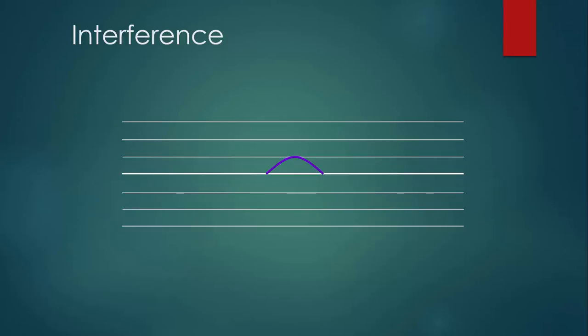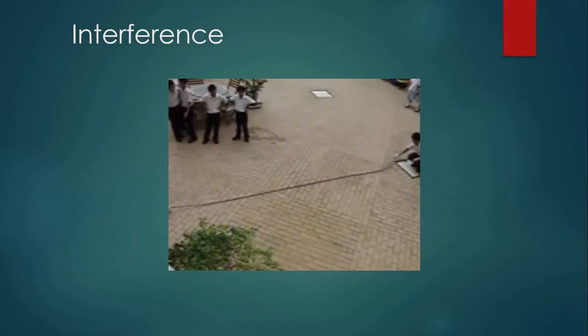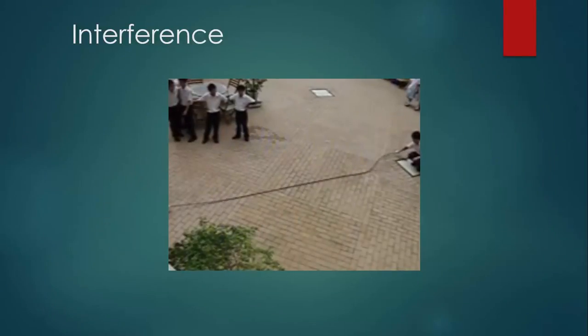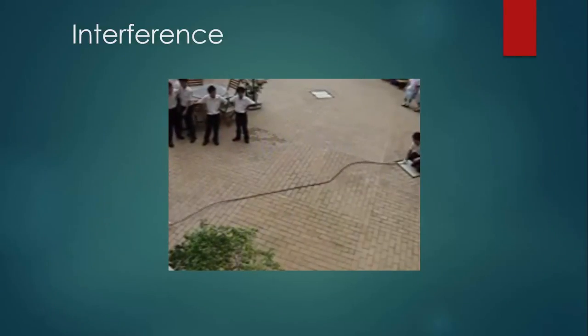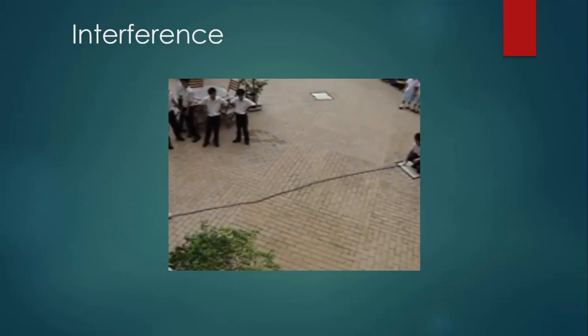When they're done interfering, they continue moving in the direction they were originally moving, with the displacements they originally had, as if nothing ever happened. Let's take a look at a couple of real-life examples. The trough on the left and the crest on the right have just about the same displacement, so when they interfere, you should expect the resultant displacement to be zero — you can see that right here.